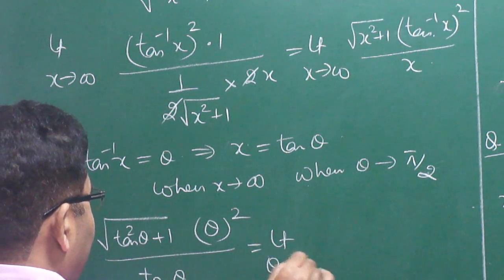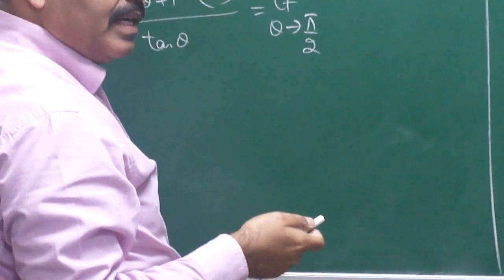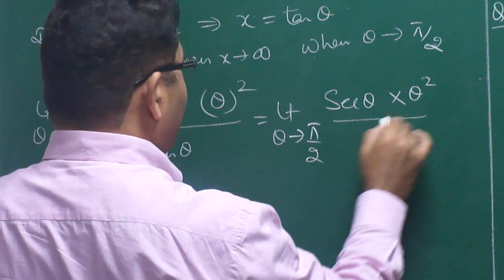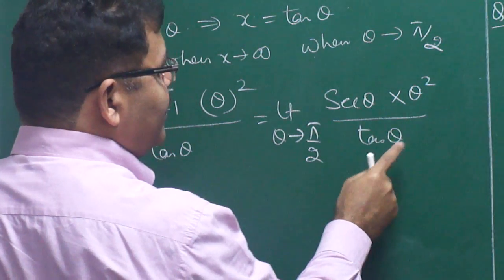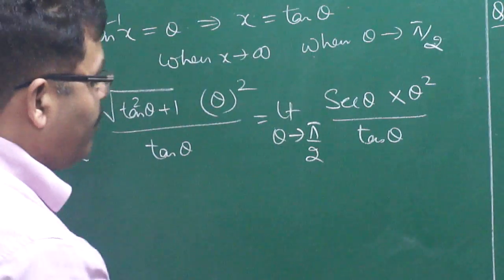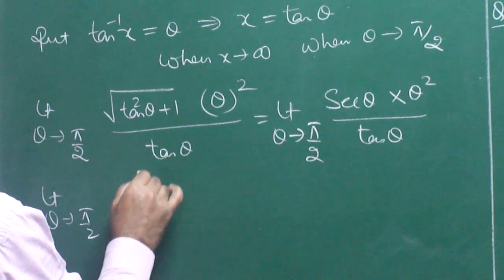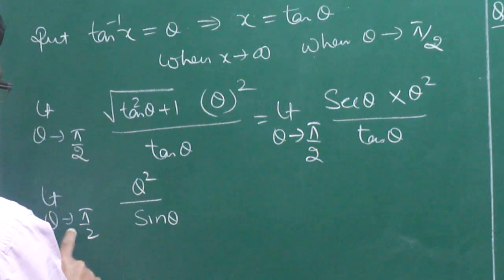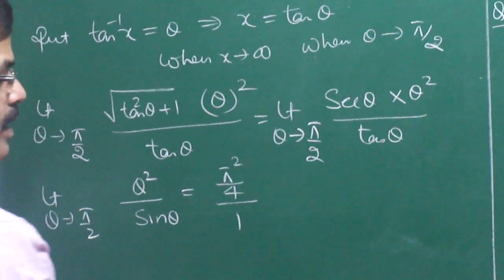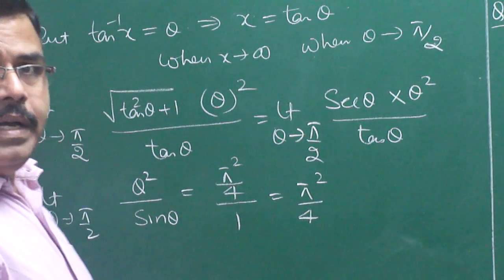After substitution: limit θ → π/2 of sec(θ) · θ² / tan(θ). Since tan(θ) = sin(θ)/cos(θ), the cos(θ) cancels with sec(θ), leaving θ²/sin(θ). As θ → π/2, this becomes (π/2)²/sin(π/2) = (π²/4)/1 = π²/4. So the answer is π²/4.